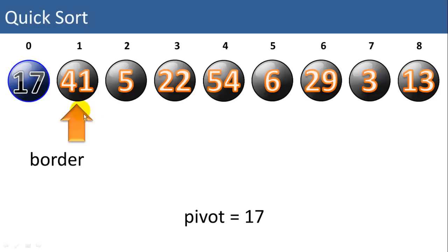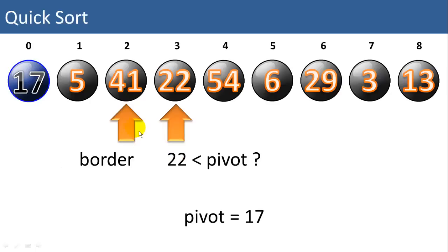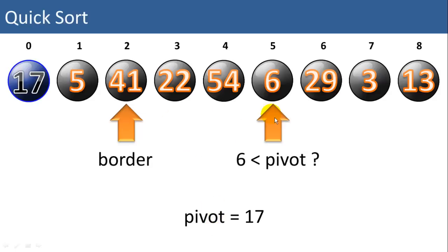Then we can start doing comparisons. We have a border value — everything to the left of the border is going to be smaller than the pivot. We'll work our way through this list towards the right. We compare 5 to our pivot value. Is 5 less than the pivot? Yes, so we're going to swap it with the border. Now we'll advance both pointers. Our border is now at 41. We look at 22 — is it smaller than the pivot? No. We advance this pointer. Is 54 smaller than the pivot? No. Is 6 smaller than the pivot? Yes, so we're going to swap 6 with our border value.